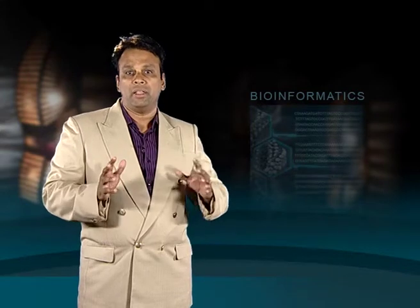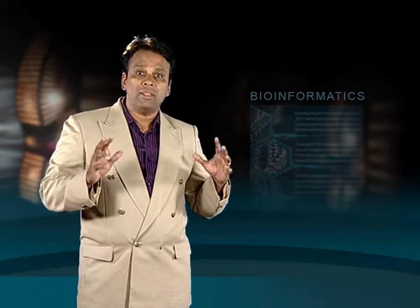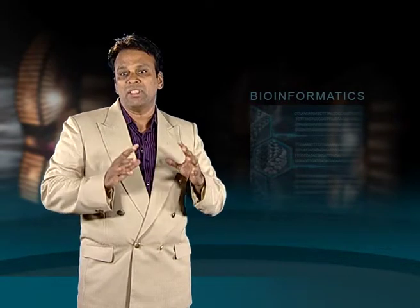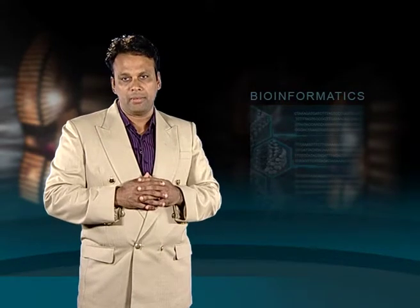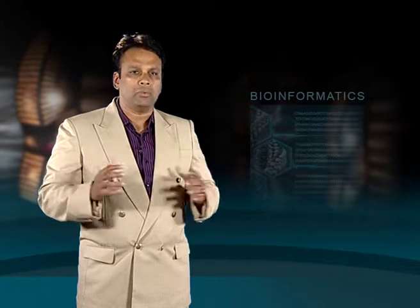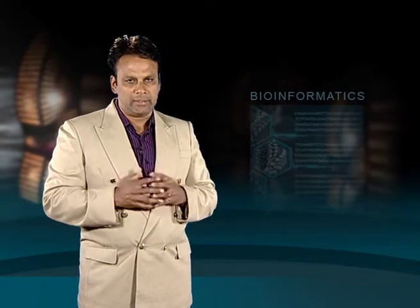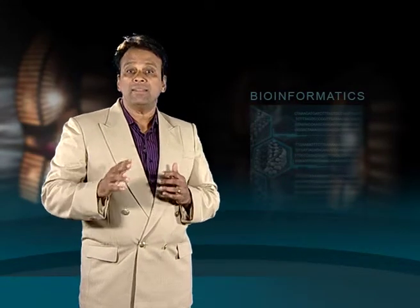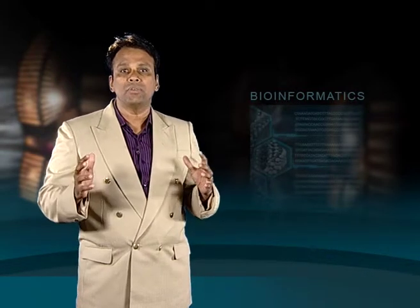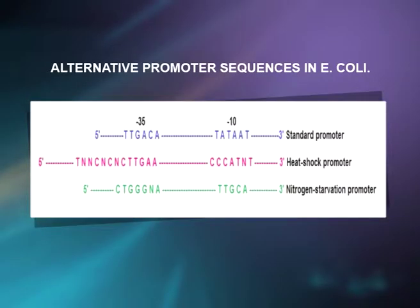E. coli contains multiple sigma factors to recognize different types of promoter sequences. The sigma factor that recognizes the consensus sequences is called sigma 70 because it has a mass of 70 kiloDaltons. When the temperature is raised abruptly, a different sigma factor comes into action: E. coli synthesizes sigma 32, which recognizes the promoter sequences of heat shock genes. These promoters exhibit minus 10 sequences somewhat different from those of standard promoters. A comparison of consensus sequences of standard promoters (sigma 70), heat shock promoters (sigma 32), and nitrogen starvation promoters (sigma 54) of E. coli is shown in the figure.